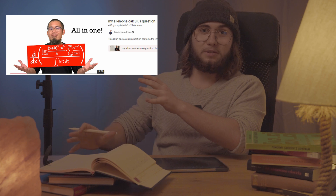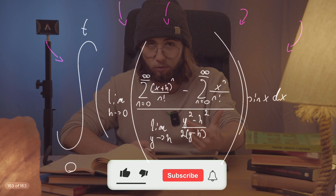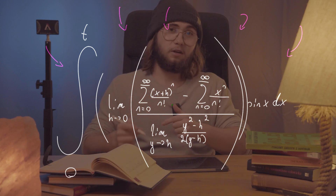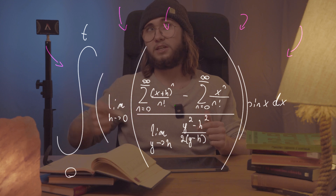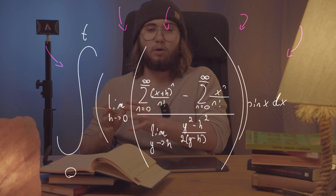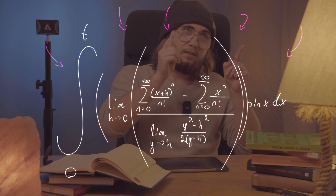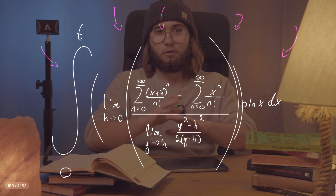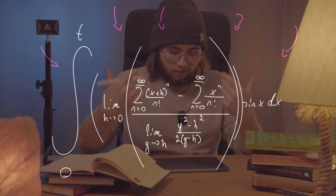Today we are solving a beautiful calculus question, inspired by a blackpenredpen episode. We need to evaluate the integral from zero to t of the limit as h approaches zero of the sum as n goes from zero to infinity of (x+h)^n / n! minus the same series with x+h replaced by x, everything divided by the limit as y approaches h of (y²-h²)/(2y-h), then multiplied by sin(x), all with respect to x.